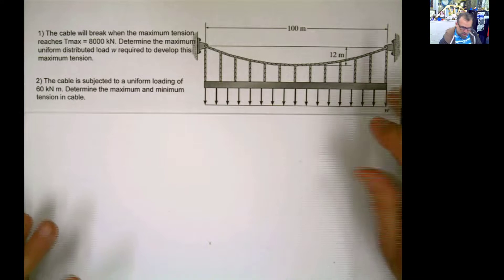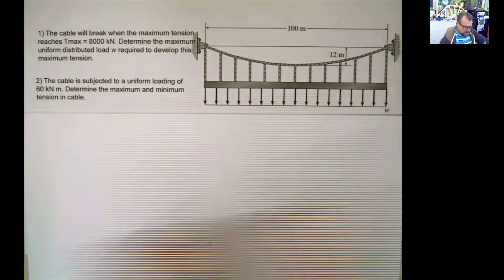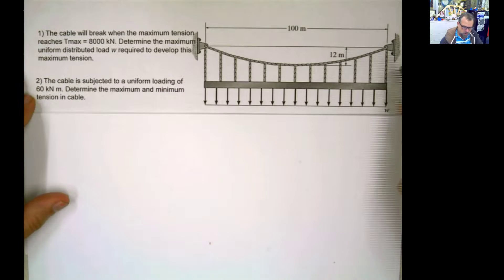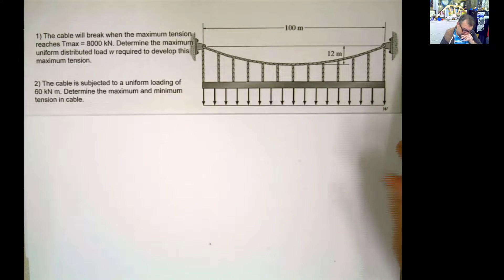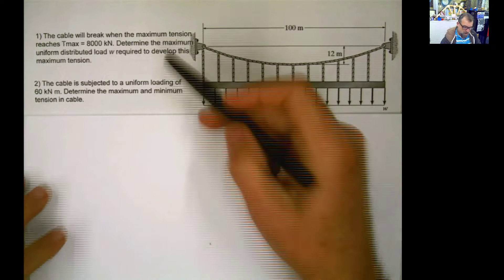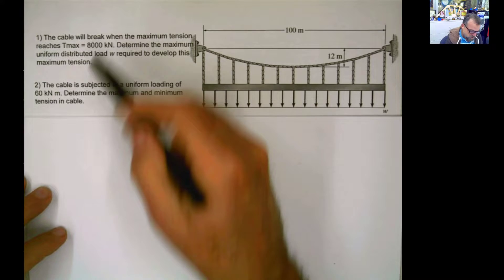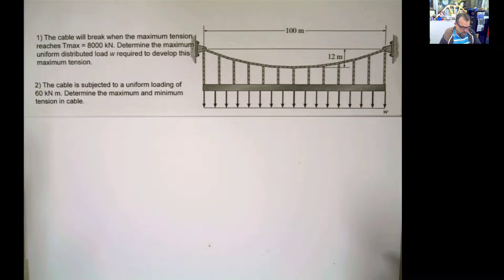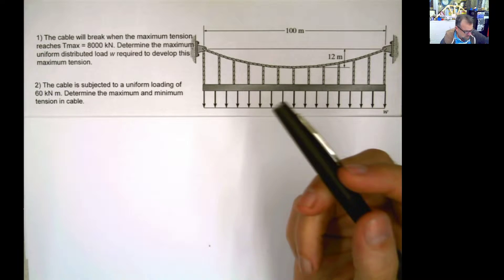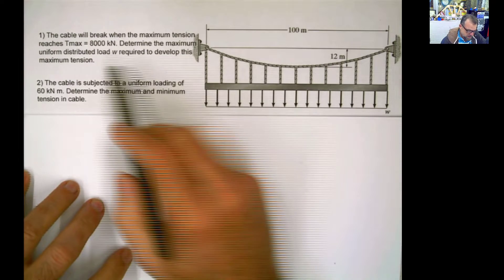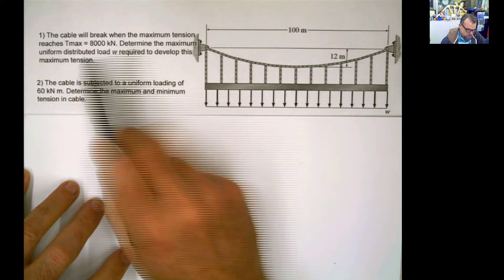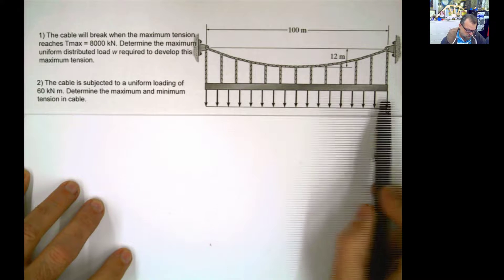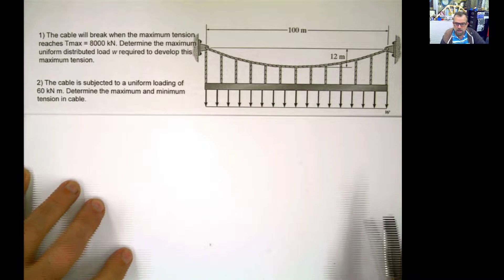Hello guys. So let's work this problem. This problem is about a cable subject to distributed load. There are two parts to this problem, and in this video I'm going to do the first part — solved in two different ways. The problem says the cable will break when the maximum tension T_max is 8,000 kilonewtons. Determine the maximum W required to develop that tension.